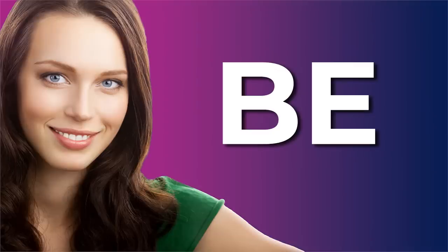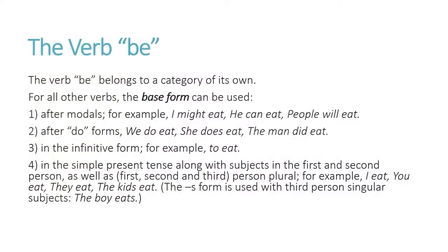The last one is the verb 'be.' The verb 'be' belongs to a category of its own. For all other verbs, the base form can be used after modals — I might eat, he can eat — after do forms — we do eat, she does eat, the man did eat — in the infinitive form — to eat — and in the simple present tense with first and second person subjects as well as third person plural: I eat, you eat, they eat, the kids eat.